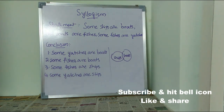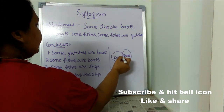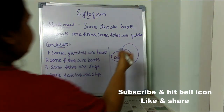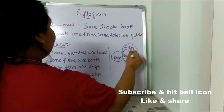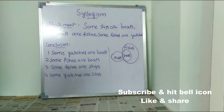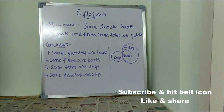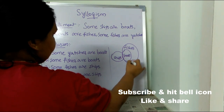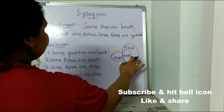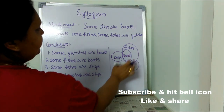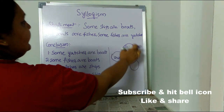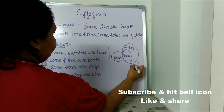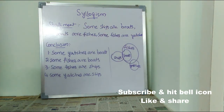Some ships are boats — draw ships and some of them overlapping with boats. All boats are fishes — cover all of the boats circle inside a bigger fishes circle, because all the boats are fishes. For the third statement, some fishes are yachts — there is a common element between fishes and yachts, so I've drawn the yachts circle overlapping only with fishes, not touching boats or ships, because only some fishes are yachts.